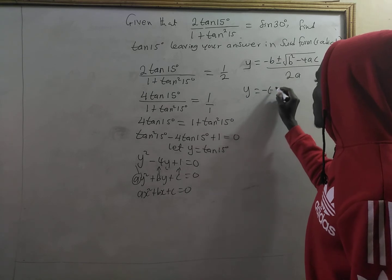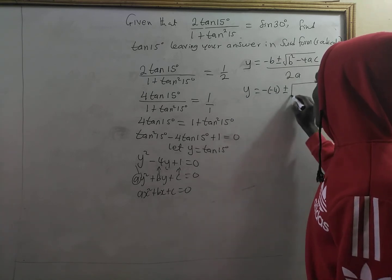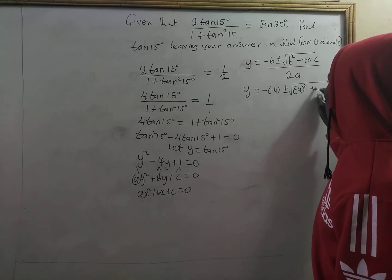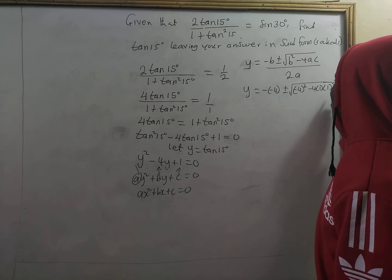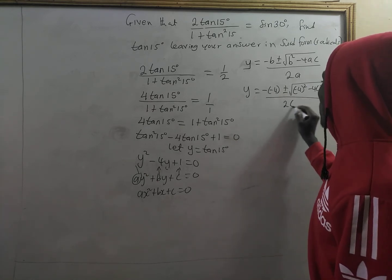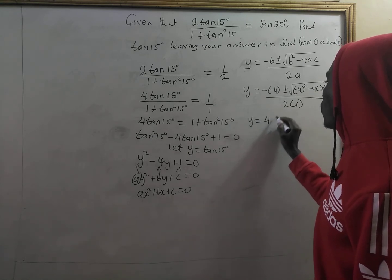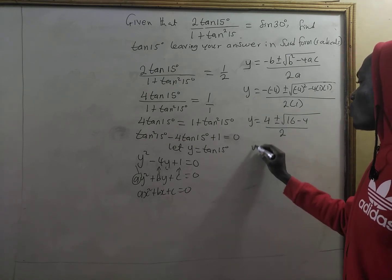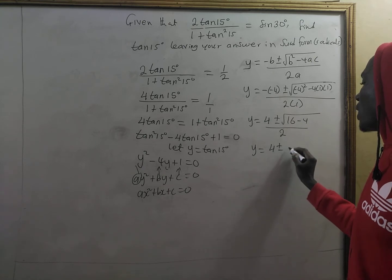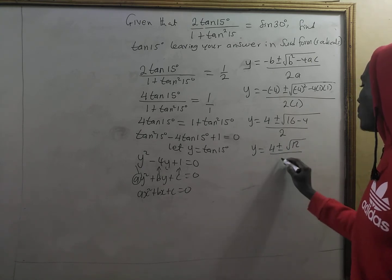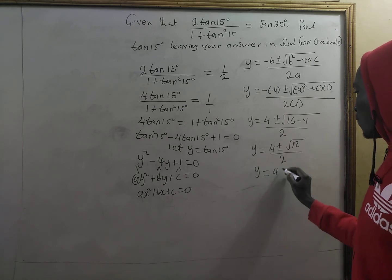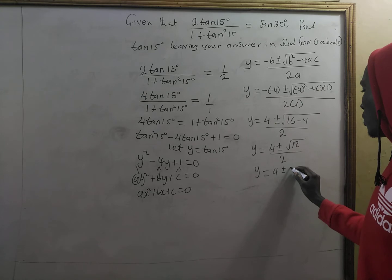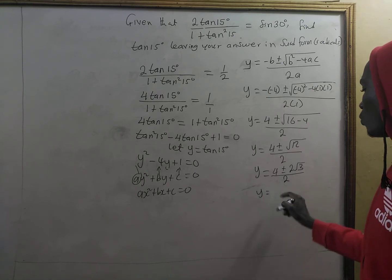So we have y equal to negative times negative four, plus or minus the square root of negative four squared minus four times one times one, all divided by two times one. That gives y equal to positive four plus or minus the square root of 16 minus four, all divided by two, which is y equal to four plus or minus the square root of 12, divided by two.